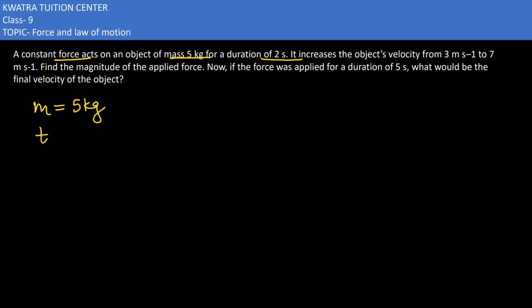For a duration of 2 seconds, it increases the object's velocity from 3 to 7. The initial velocity u would be 3 because it is starting with 3 meters per second.